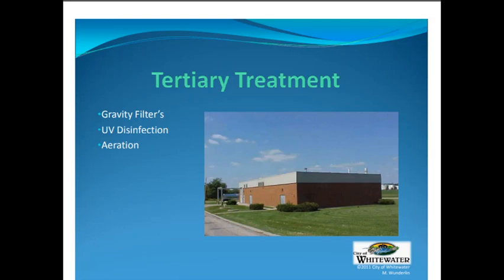Then they send the water through tubes where very strong UV light blasts all the bacteria and kills it. Then they aerate it to get oxygen back in the water, and then it just goes to Whitewater Creek. The water is as clean as what's already in the river itself — not drinkable yet, but as clean as the natural stream would be. That's a little overview of what happens when you flush the toilet.